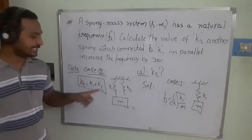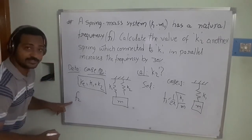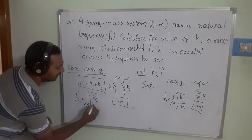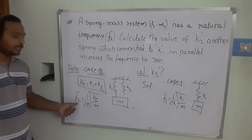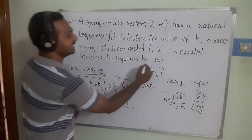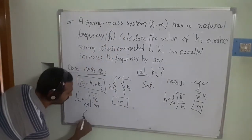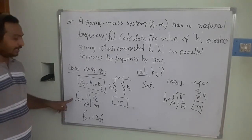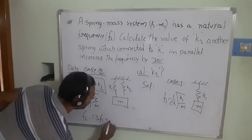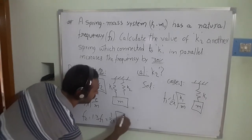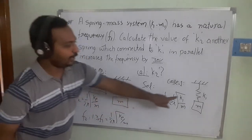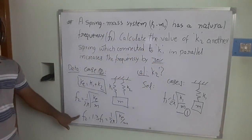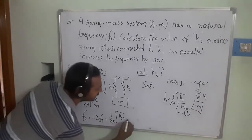The natural frequency for Case 2 is f2 = (1/2π) × √(k_eq/m) = (1/2π) × √((k1 + k2)/m). Since f2 = 1.3 × f1, we substitute: equation 1 is f1 = (1/2π) × √(k1/m), and equation 2 is f2 = (1/2π) × √((k1 + k2)/m).